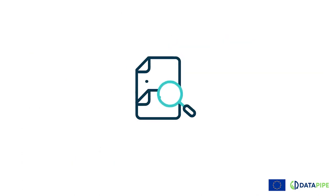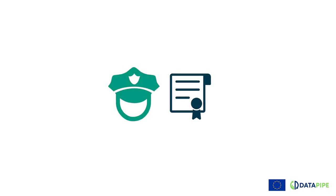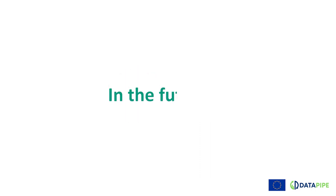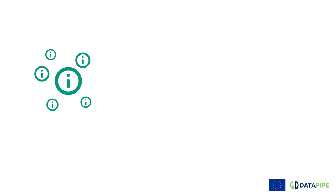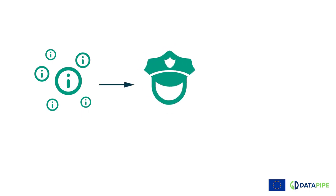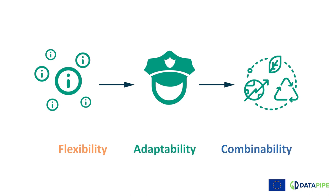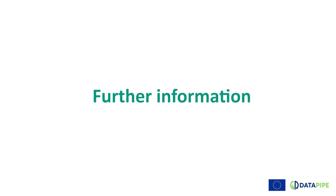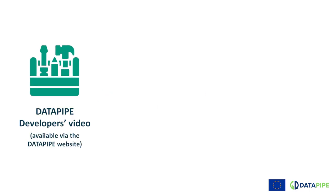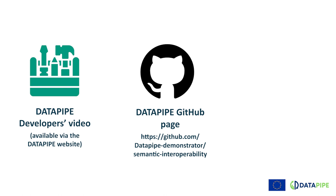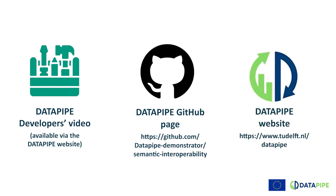It is important to highlight that in the scenario we present in this video, we look beyond what is currently possible or required for Customs given the current regulations. We take the view that a wealth of information is and will be available in the future. Authorities may benefit from this information for circular economy and sustainability monitoring. The flexibility, adaptability, and combinability properties of the system make it future-proof. If you are interested in the technical details of this demo, you can also watch the Datapipe developers video, visit the Datapipe GitHub page where new demo videos will be posted, or visit the Datapipe website for further information.